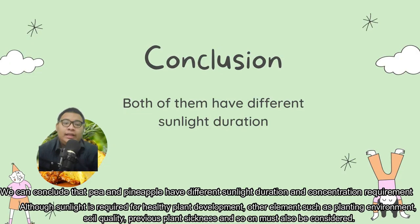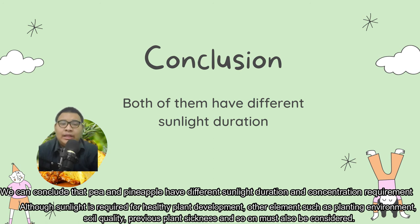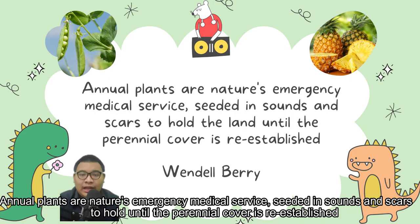We can conclude that pea and pineapple have different sunlight duration and concentration requirements. Although sunlight is required for healthy plant development, other elements such as planting environment, soil quality, previous plant sickness, and so on must also be considered. Thank you.